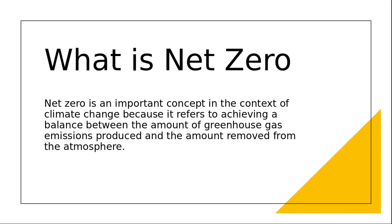Greenhouse gases are important to maintain the temperature of a planet, but too much of everything is bad. As long as we have a balance between the amount of greenhouse emitted and the amount removed, we will not have an issue with climate change. Various scientists and professors who've been actively studying climate change have published huge stats around why things are getting bad for our planet.